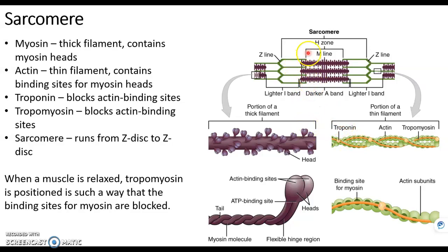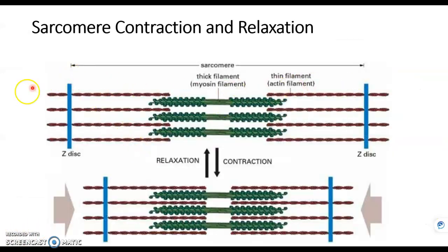Myosin needs to form a crossbridge, or grab onto actin, in order to produce a contraction. And we'll see how that happens on the next slide. Here's one sarcomere again from Z-disc to Z-disc. We can see the myosin heads are not bound to actin, and there is a little bit of overlap here.